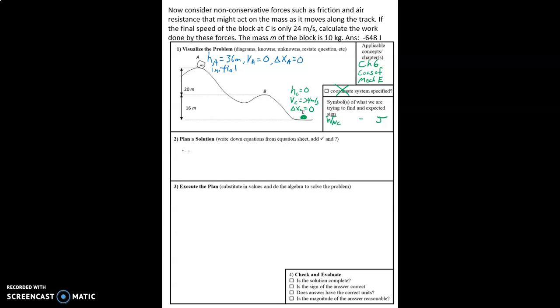So before we saw that the block had a speed of 26.8 meters per second, and now we're seeing that the speed is less. It's only 24 meters per second by the time it gets there, and that's because of those non-conservative forces.